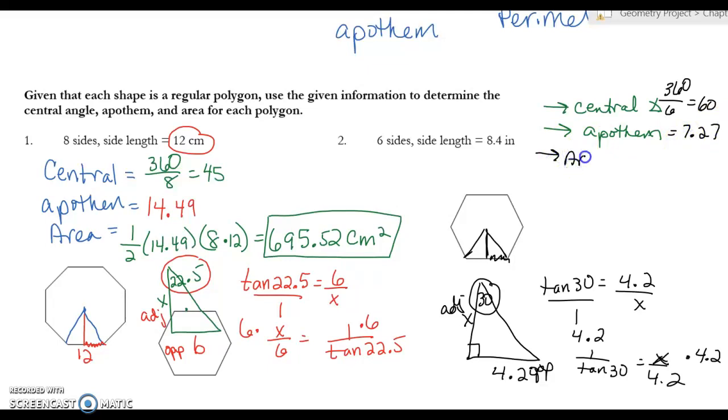And now my area, remember, is 1/2 my apothem, 7.27, times my perimeter. And I'm not going to add all those sides up; I just know that I have 6 sides times 8.4. So let's type all that in, and I end up getting 183.2 inches. And that's it. Again, the hardest thing is usually finding the apothem, but with a little time and practice you will get it.